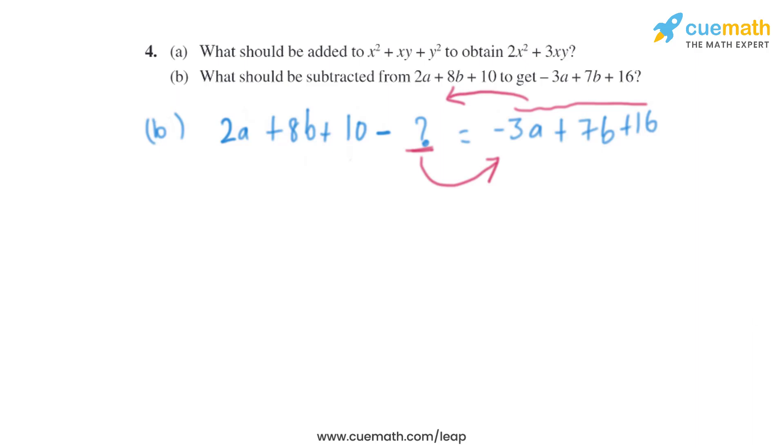So it will become 2a, and -3a will change to +3a. There is already 8b, and +7b will change to -7b. And there is already +10, and +16 will change to -16, and -question mark will go to +question mark.